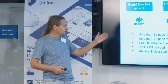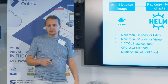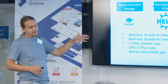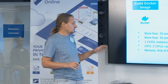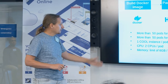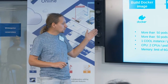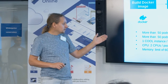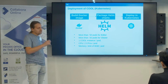In our deployment we have more than 50 pods for the editor and 50 pods for the viewer. For some time we had 100, but we decided to scale them to half and it seems there was no negative impact, so we kept them at 50. We have one COOL instance per pod. For CPU we use two cores per pod, and for memory we have a limit of 6 gigabytes.